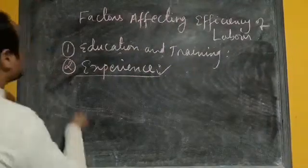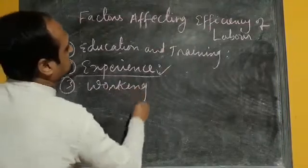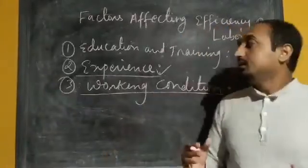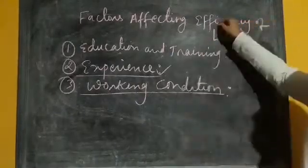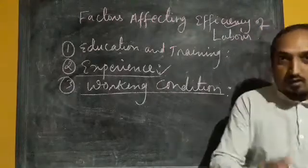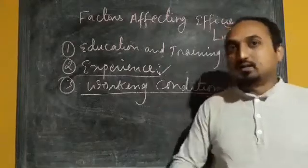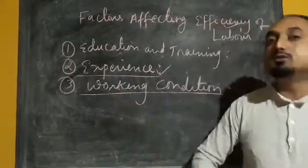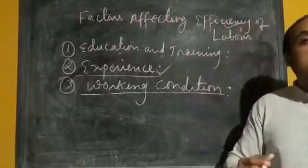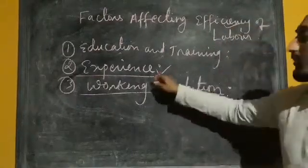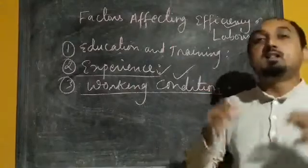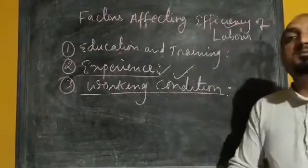The next factor that affects the efficiency of labour is working condition. Working condition is also one of the important factors. If the place where workers work is clean and hygienic, and if all the facilities like safe drinking water and toilet facilities are easily available or provided by the producing unit, then the healthy working condition will be there and workers will improve their efficiency. Also, if different employees have good healthy relations with each other, that also helps to improve the efficiency of workers.